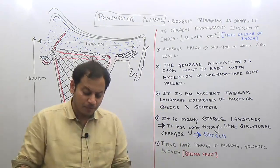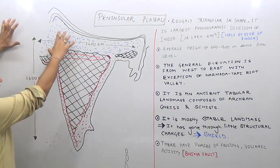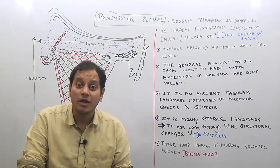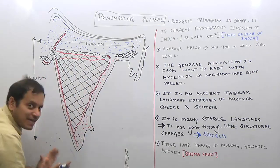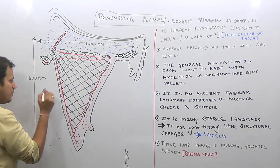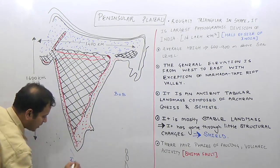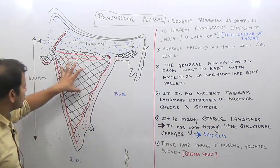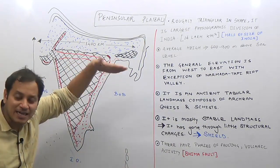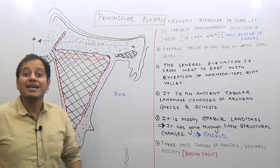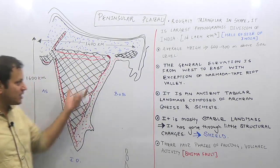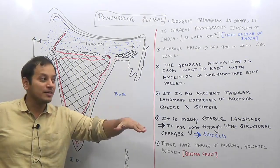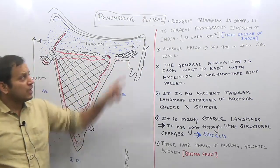Why is it called the peninsular plateau? 'Peninsular' means an area of land surrounded by sea on three sides. This is a roughly triangular land surrounded by the Arabian Sea, the Bay of Bengal, and the Indian Ocean on three sides. It is known as a plateau because it is a flat tableland at a greater height compared to the surrounding region — flat region with greater elevation.